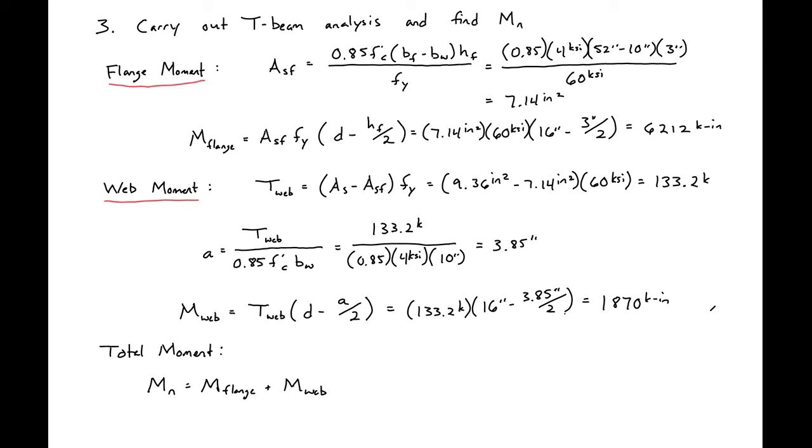Then we'll add the flange moment and the web moment up. We'll have our 6,212 kips plus our 1,870 kips to find our total moment to be 8,082 kips. This is our final moment. In order to check to make sure that we're tension controlled and we're yielded, we'll need to check that our as provided, or the six number 11 bars, is less than our as max, which we'll do in the next step.